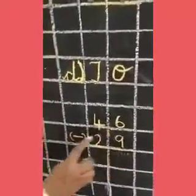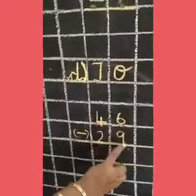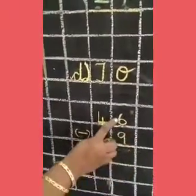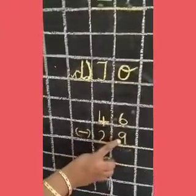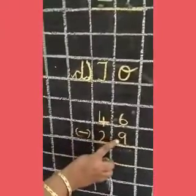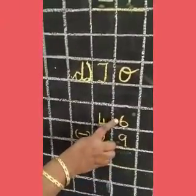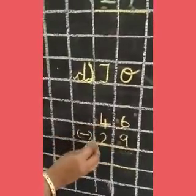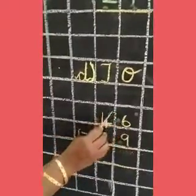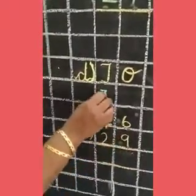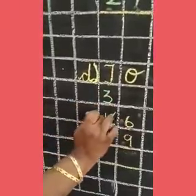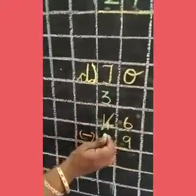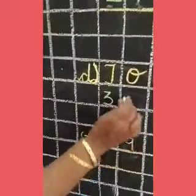46 minus 29. Now we are going to subtract the ones place. 6 minus 9 — 9 is bigger than 6, so what we have to do? We have to borrow from the tens place. Before 4 comes 3. Now we are giving one ten to the ones place.